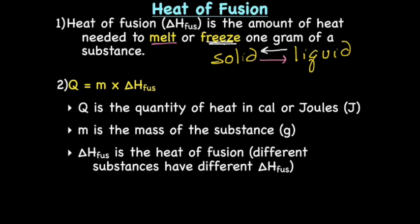So for heat of fusion, there is an equation, it's Q = m × ΔH_fus. Q is the quantity of heat and that will be either in calories or joules. Then you have m, m is the mass of the substance in grams. And ΔH_fus is the heat of fusion. Different substances have a different heat of fusion. That's a constant per a particular substance.